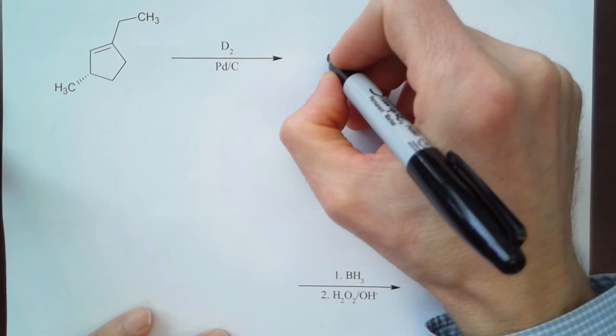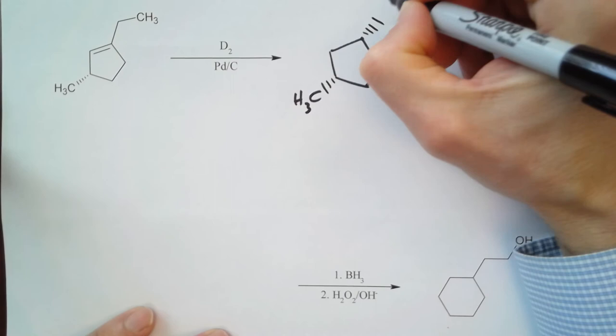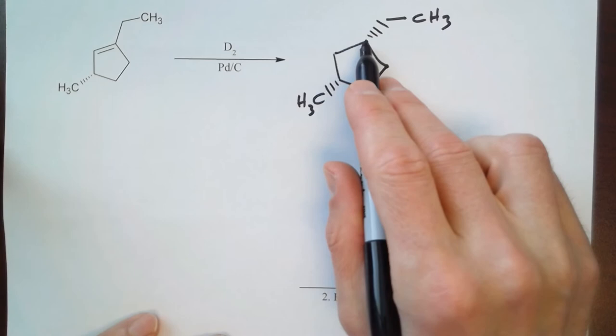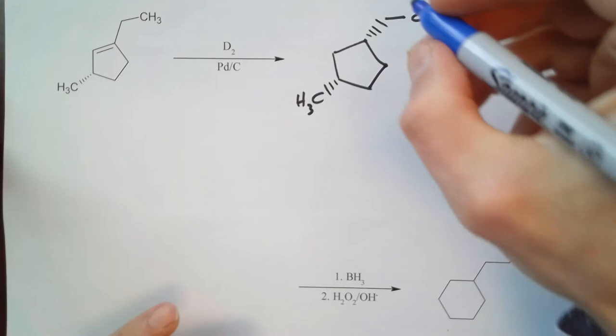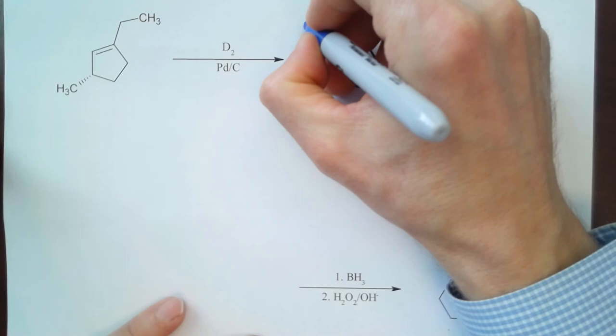So if I go ahead and draw out my carbon backbone—if I put this ethyl group in the background, then I'm going to put the deuterium in the foreground. I'm going to go ahead and put that in blue, so we're going to make the deuterium blue. So I'm going to put one deuterium here and one deuterium there.